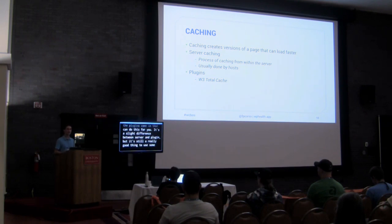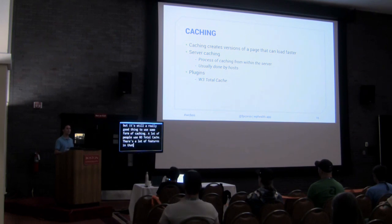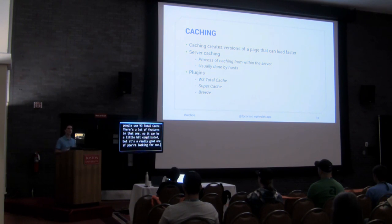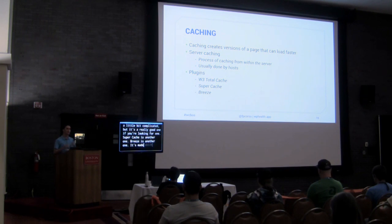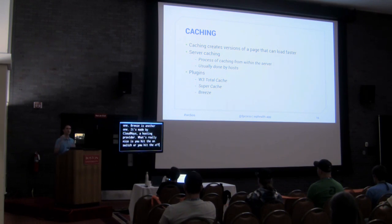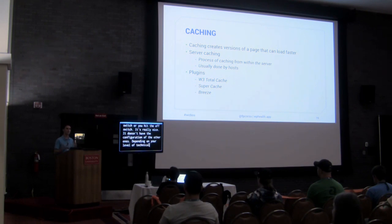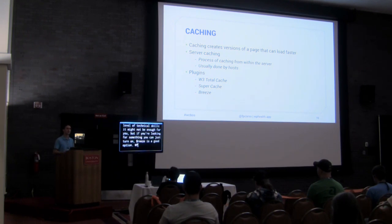A lot of people use W3 Total Cache — it has a lot of features so it can be a little complicated, but it's a really good one. Super Cache is another one. Breeze is another one made by Cloudways — what's nice about Breeze is it's really simple, you just hit the on or off switch. It doesn't have all the configuration of the others, so depending on your technical skill level it might not be enough. WP Rocket is another one recommended to me several times.